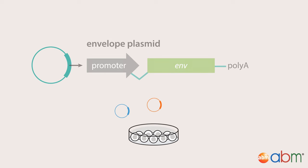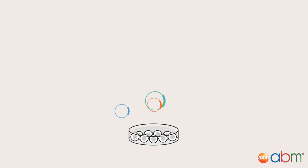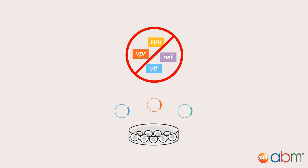The envelope plasmid contains genes encoding for envelope proteins. For safety reasons, all other genes involved in viral propagation — for example, VPR, VIF, VPU, and NEF — are excluded.